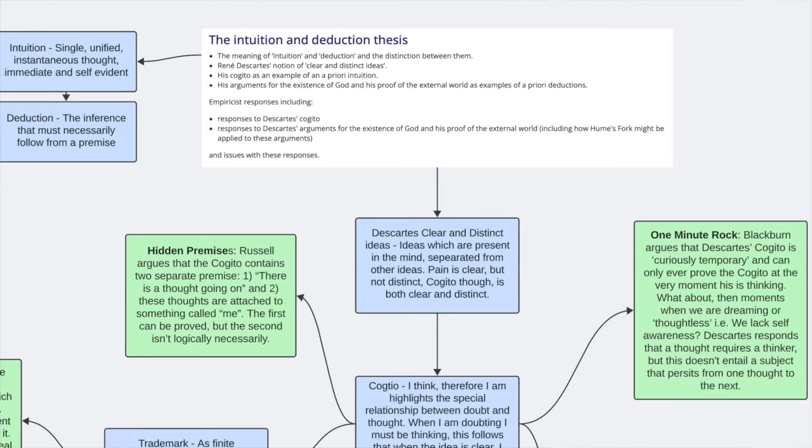These are two criticisms that I really like. We'll first look at the hidden premises argument and that's from Bertrand Russell. So Russell argues that the Cogito contains two separate premises.